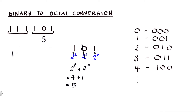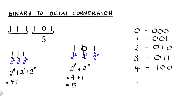For the other group, 1, 1, 1 — the positional values are two raised to zero, two raised to one, and two raised to two. Multiplying: 1 × 2² = 4, plus 1 × 2¹ = 2, plus 1 × 2⁰ = 1. The sum is 4 + 2 + 1 = 7. So the octal value of 111 is 7.